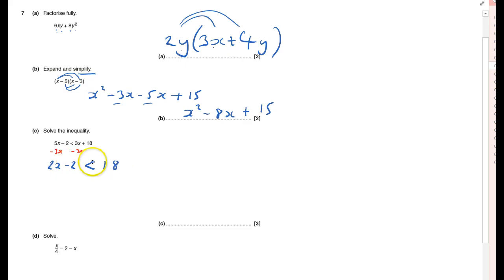Now I want to obviously get rid of the minus 2, so I'm going to add 2 to both sides, and that will give me that 2X is less than 20. And now I can divide both sides by 2. X is less than 10, that's my answer.